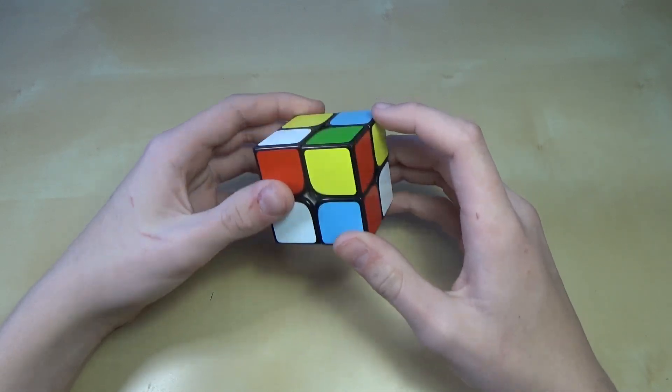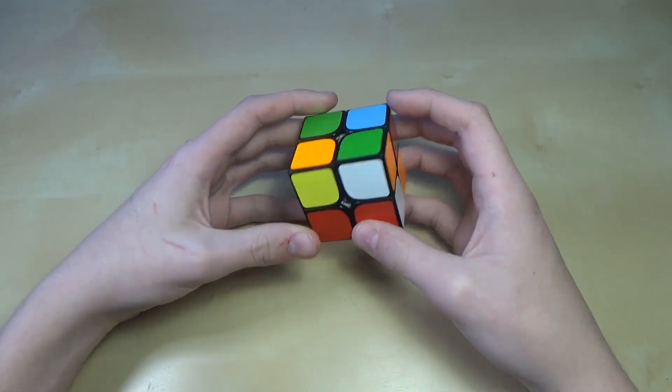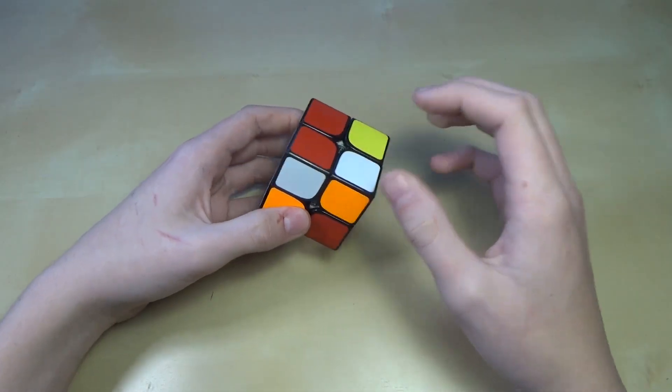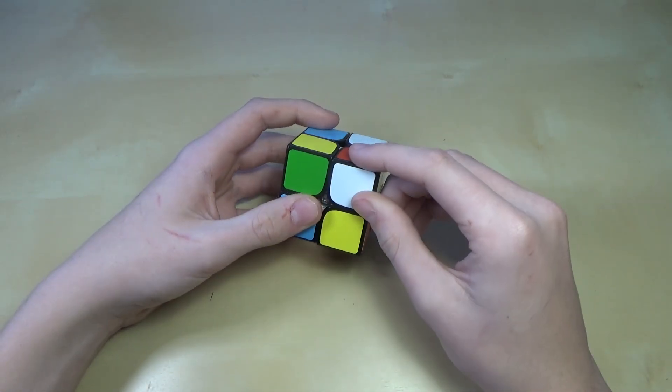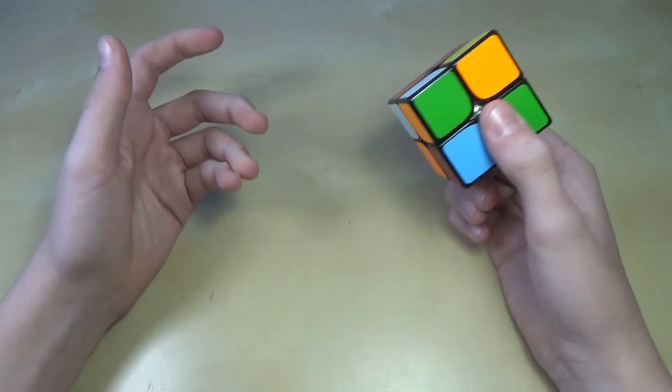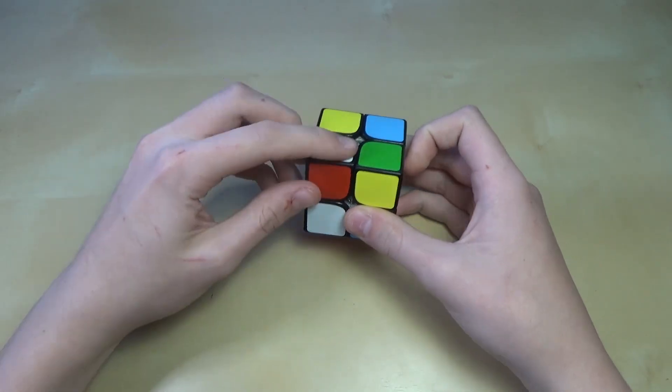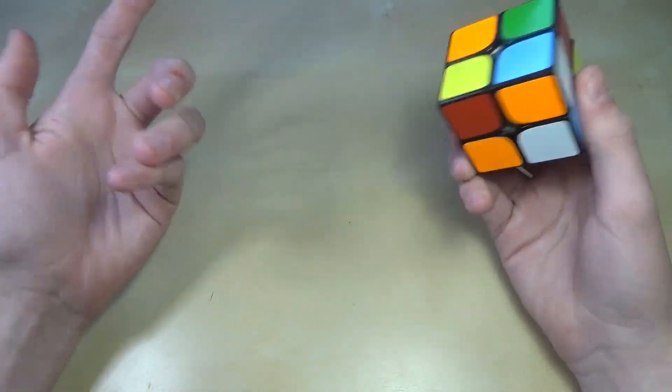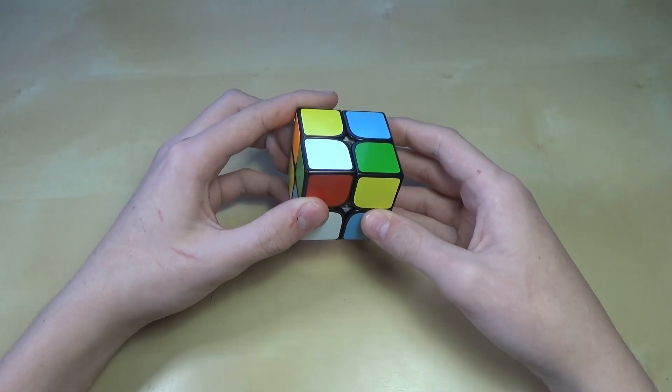So now the first step of the 2x2 is the first layer. And so we'll just find a piece. It doesn't matter which piece, just a white piece. We'll just start with this one. It doesn't matter which side it's on because there's no centers to show you which side to start on. And so we'll just start with this piece. It has white on it, so we'll use it.